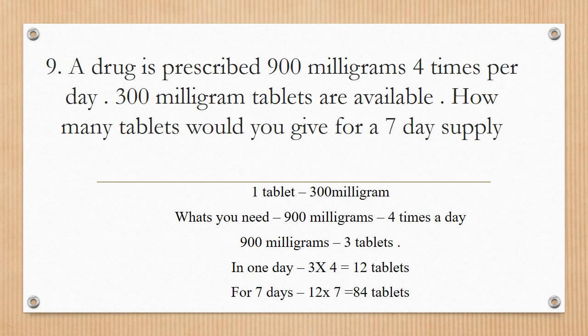Next question: a drug is prescribed 900 milligrams four times per day, and 300 milligram tablets are available. How many tablets for a seven-day supply? One dose of 900 mg = 3 tablets. Four times a day = 3 × 4 = 12 tablets per day. For seven days: 12 × 7 = 84 tablets.